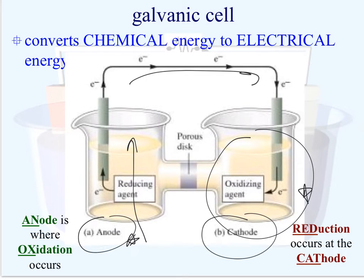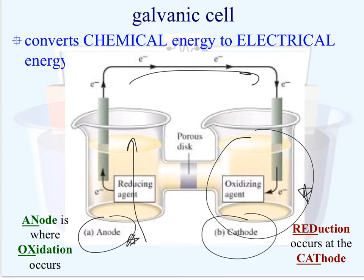The way I remember this is: N-ox — anode, oxidation — like an ox, like a big old animal. And then reduction at the cathode: red cat. So N-ox: anode is where oxidation occurs. Red cat: reduction occurs at the cathode. You want to be familiar with these vocabulary words and understand the flow of electrons — where they're originating from, the anode, and where they're ending up, the cathode.